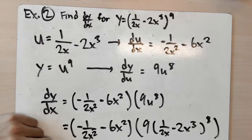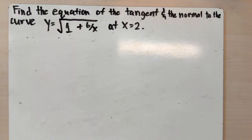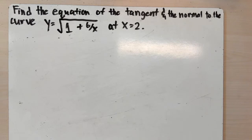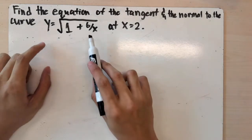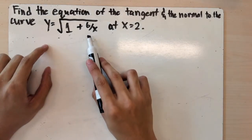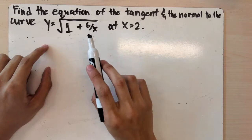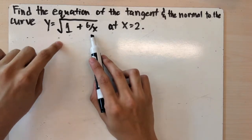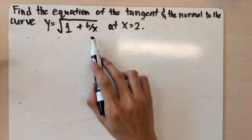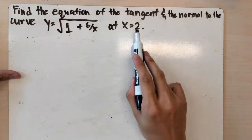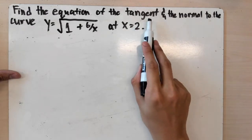With a little tidying up, you'll get the final answer. Now we'll tackle an exam-style question: find the equation of the tangent and the normal to the curve y equals the square root of (1 plus 6 over x) at x equals 2. Pause the video and try it yourself. The whole point is to find the derivative of this function, since the derivative gives the gradient at any point on the curve — specifically at x equals 2.